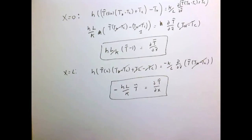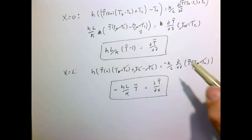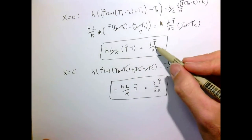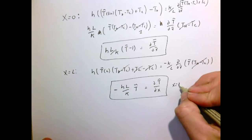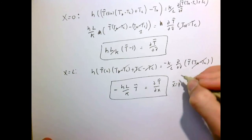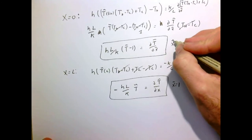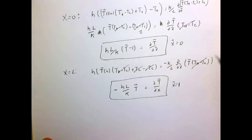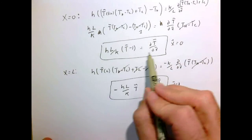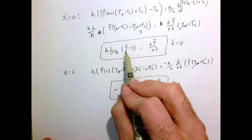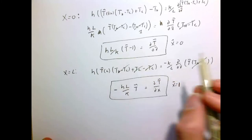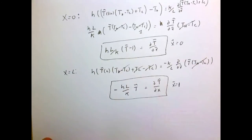Here are the two boundary conditions in dimensionless form. They give the slope at the boundary: at x-twiddle equals zero, the slope is the Biot number — HL over K — times (T-twiddle minus 1), and at x-twiddle equals one there is a similar condition.